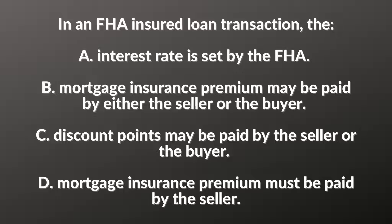Looking at B and D: B says mortgage insurance premium may be paid by either the seller or the buyer. The seller is not going to be paying this because it is similar to PMI. There are also a couple of differences between MIP and PMI — MIP has an upfront one-time component that the borrower pays, in addition to an annual premium broken down monthly. So the borrower is responsible, not the seller. Both B and D incorrectly include the seller, so both are incorrect.